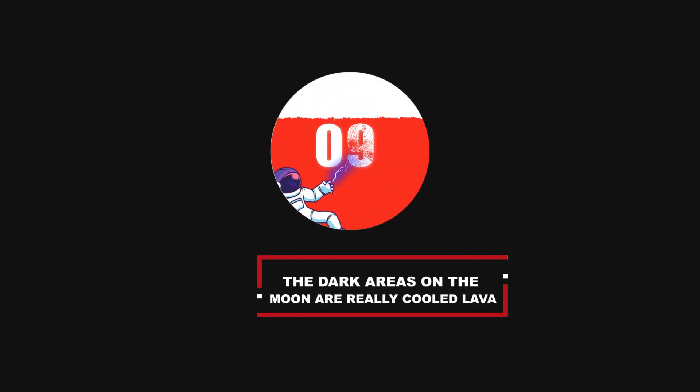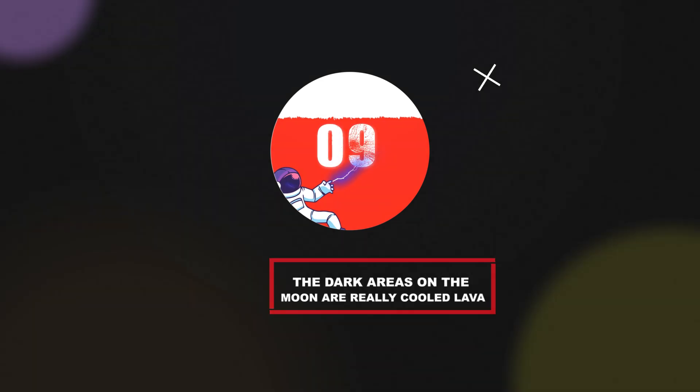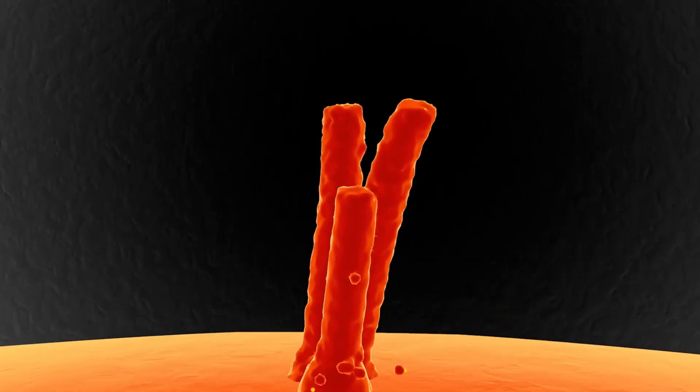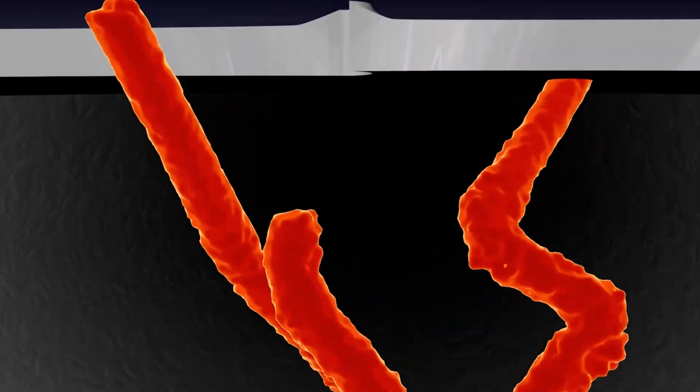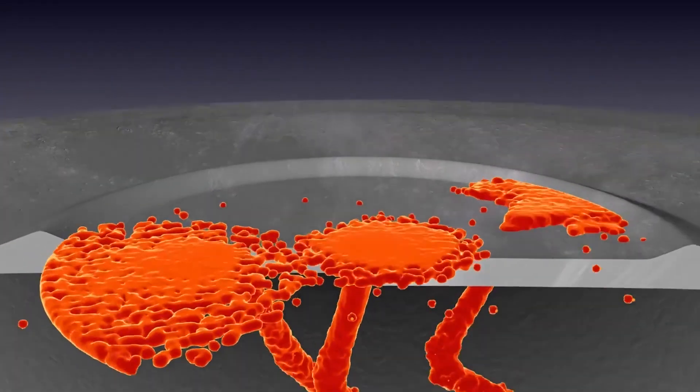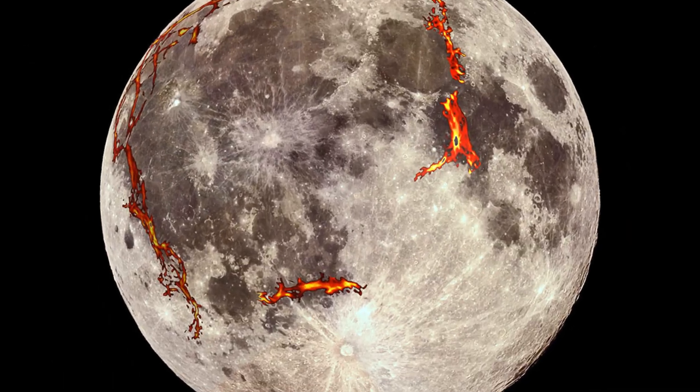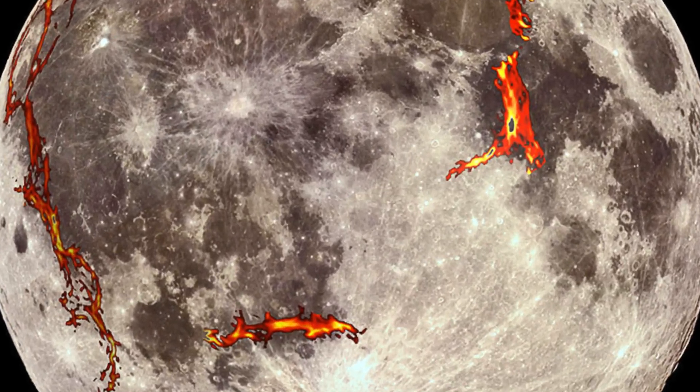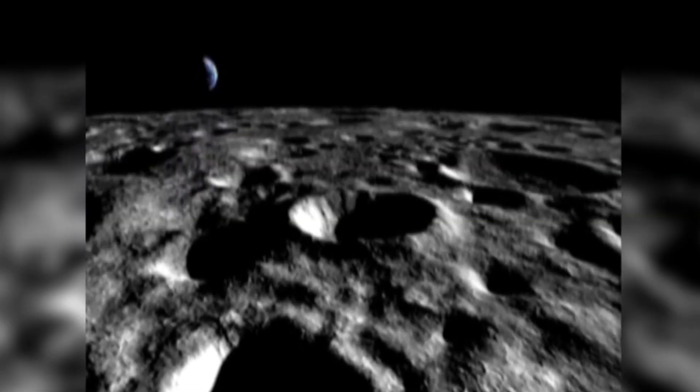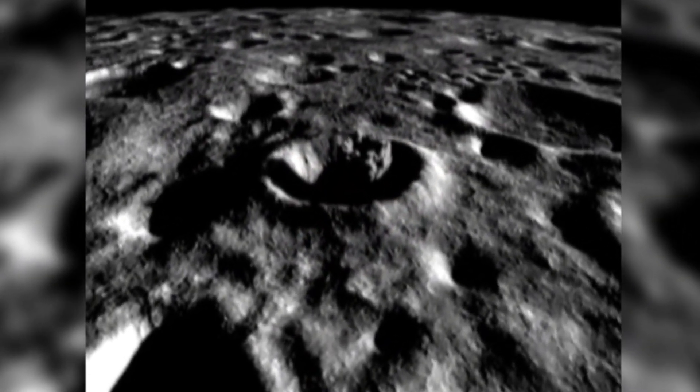Number 9: The dark areas on the Moon are really cool lava. Dark, flat layers of basaltic lava flows cover about 16% of the Moon's total surface. The lava is believed to have flowed long distances before flooding low-lying areas, like impact basins. But where the lava actually erupted from is difficult to identify because of things like erosion from objects hitting the Moon or younger flows covering older ones.